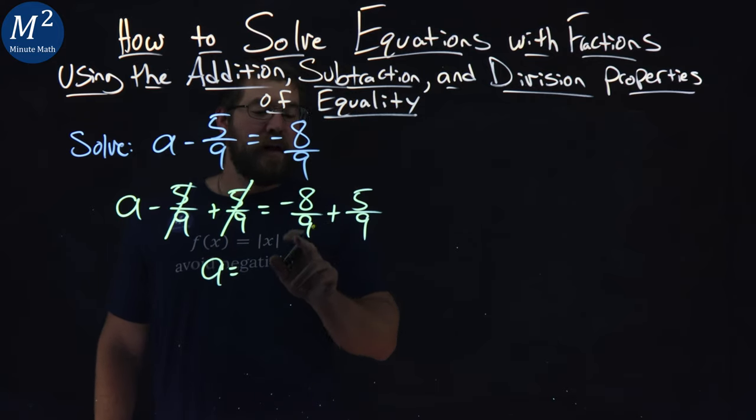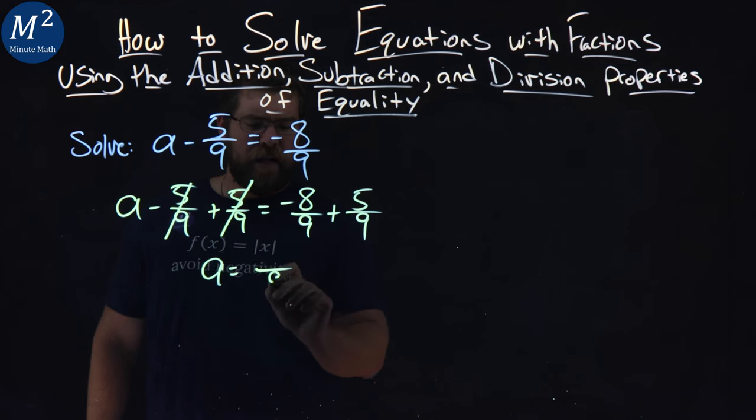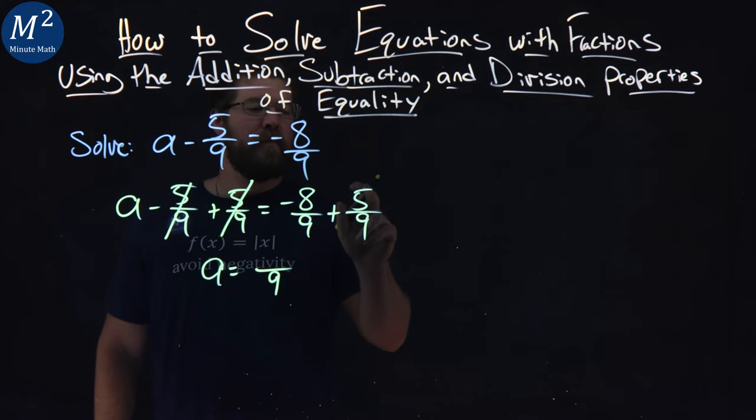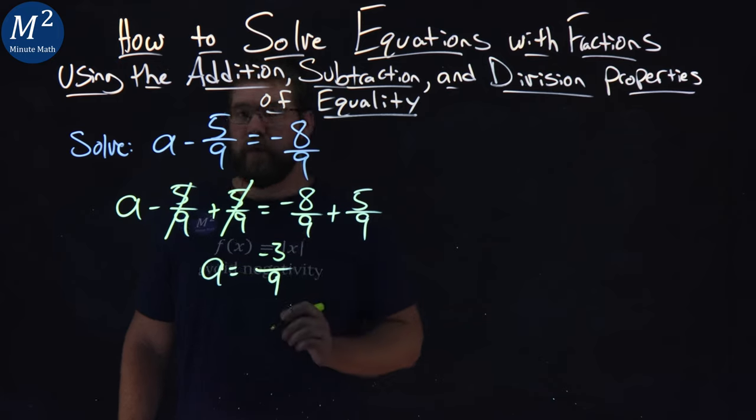Now, we already have a common denominator between these two fractions. So 9 stays down here, and negative 8 plus 5 comes out to be negative 3.